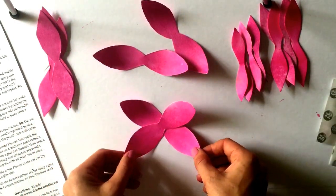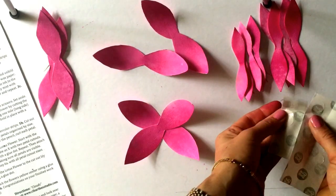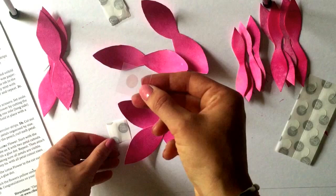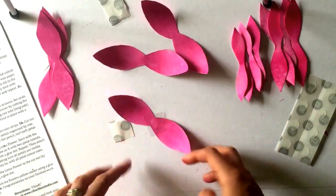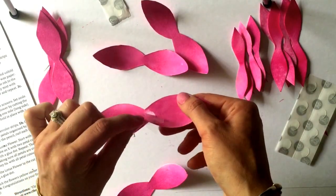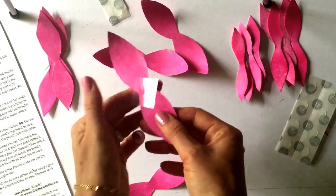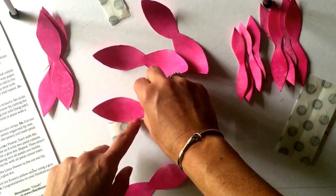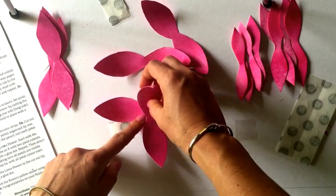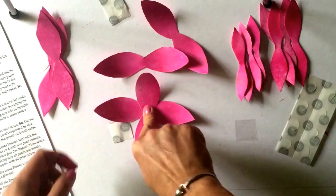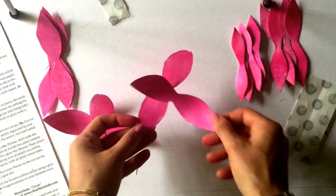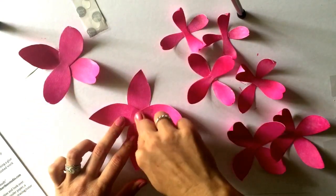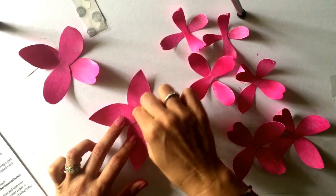Step 6a, assemble the lotus flower. Start with the large petals. Create an X with two petal cutouts, then hold in place with a glue dot. Repeat with the other two large petal cutouts. Step 6b, attach the two X's making sure all of the petals are visible.